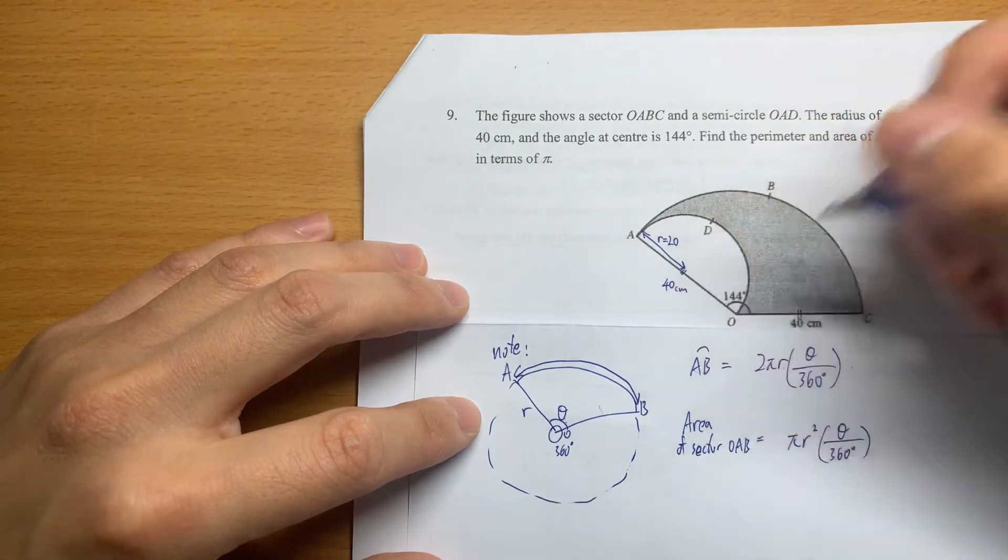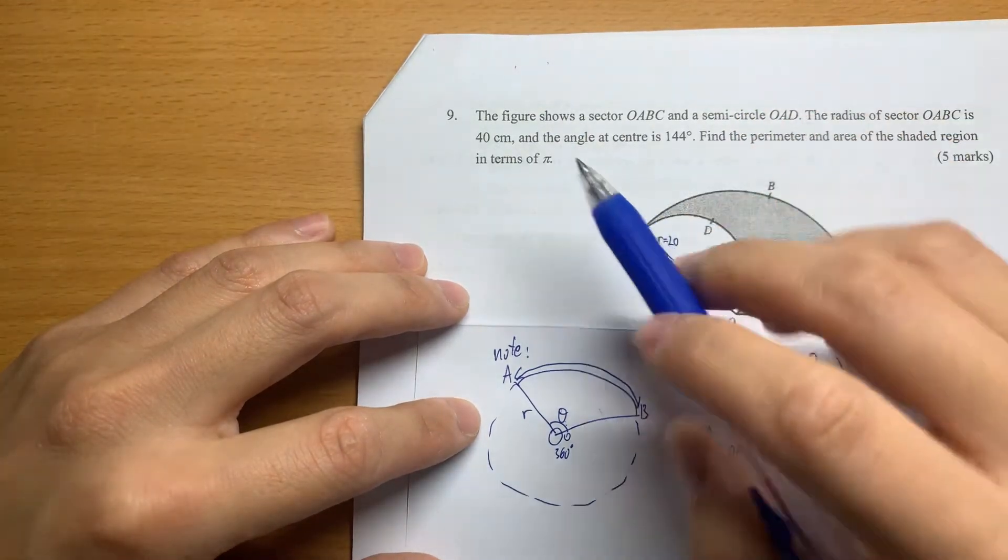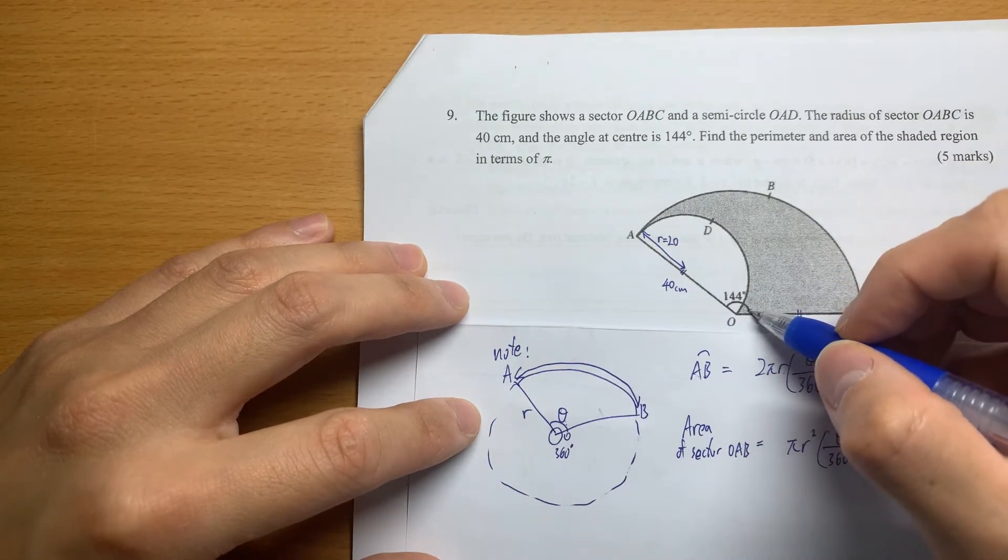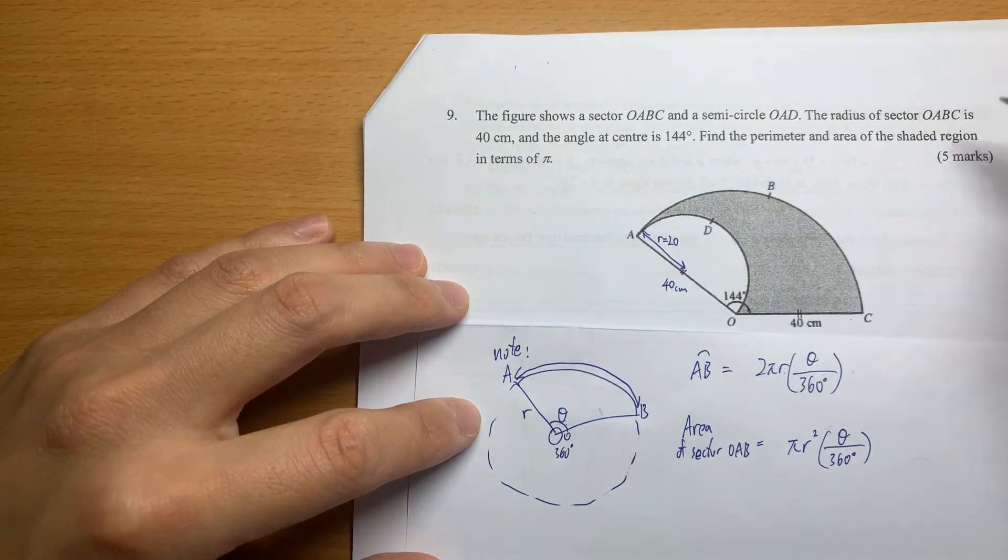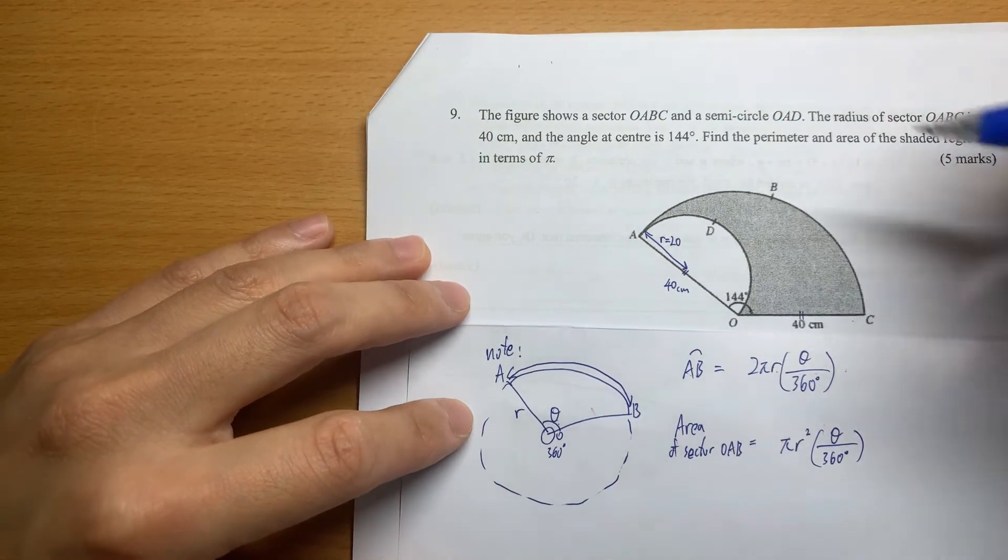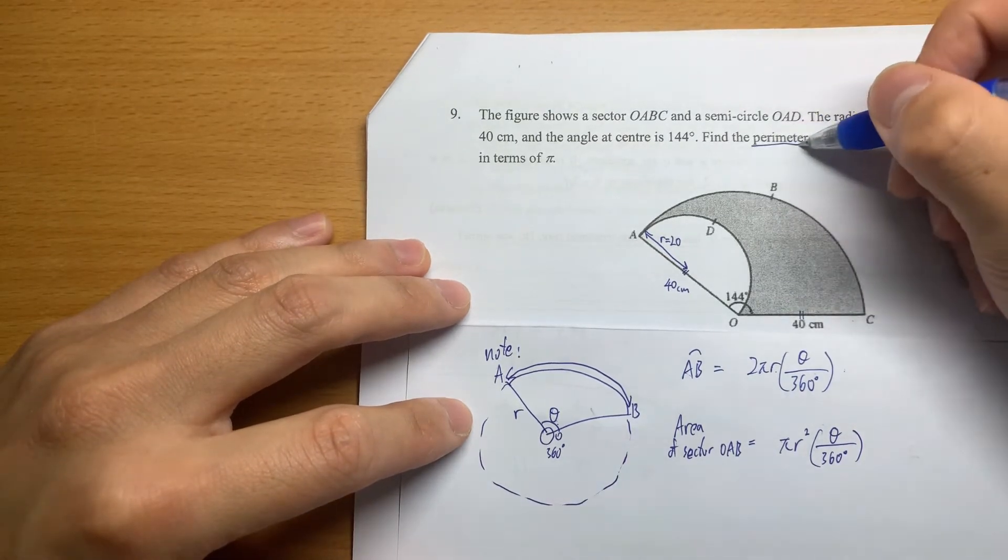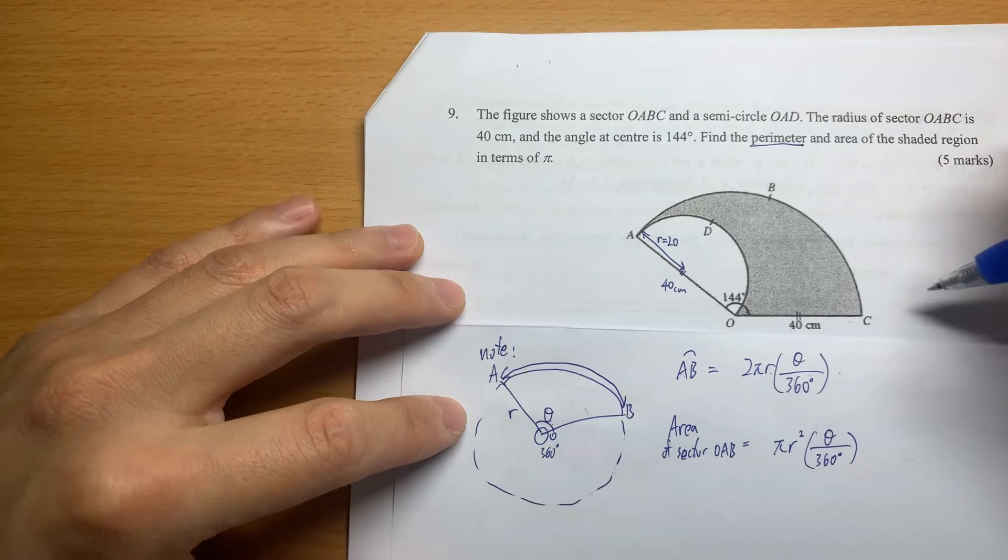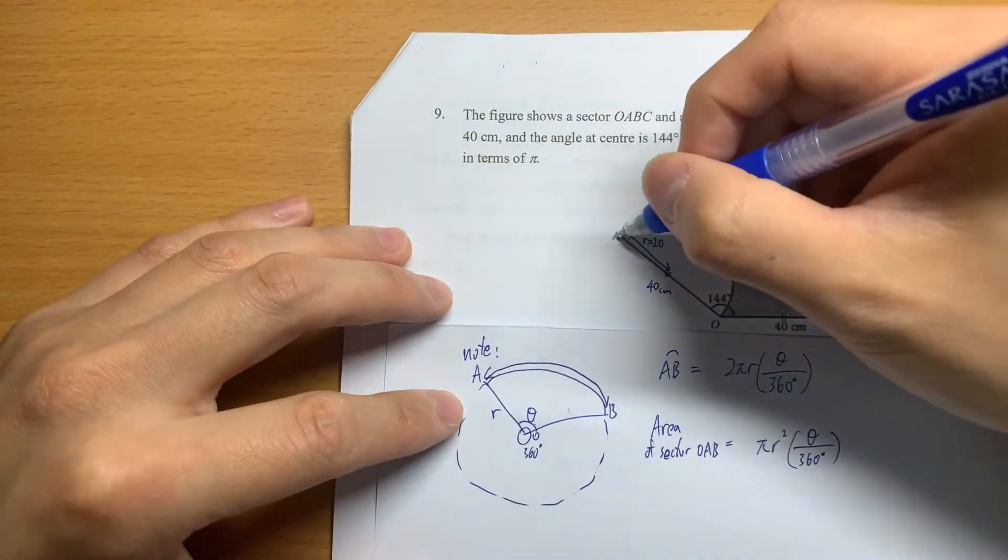After that, the angle at center is 144 degrees. Find the perimeter and area of the shaded region. So if we talk about perimeter, that means the total length of the line.